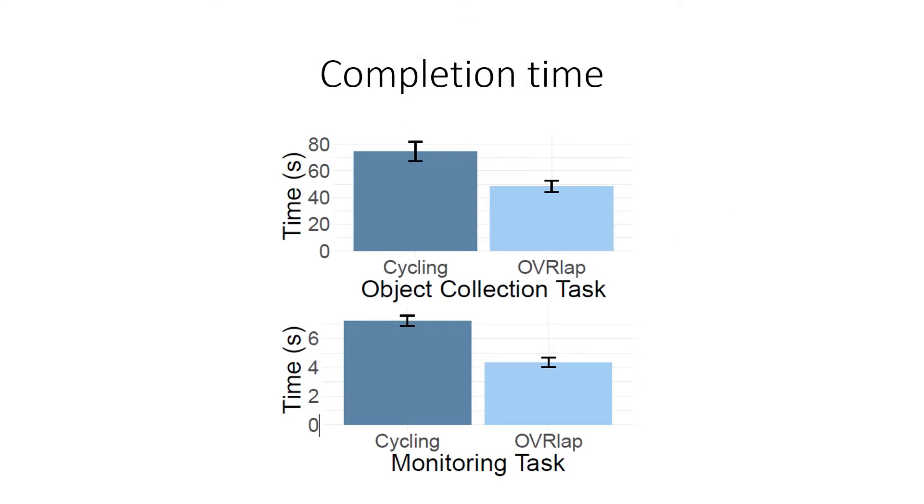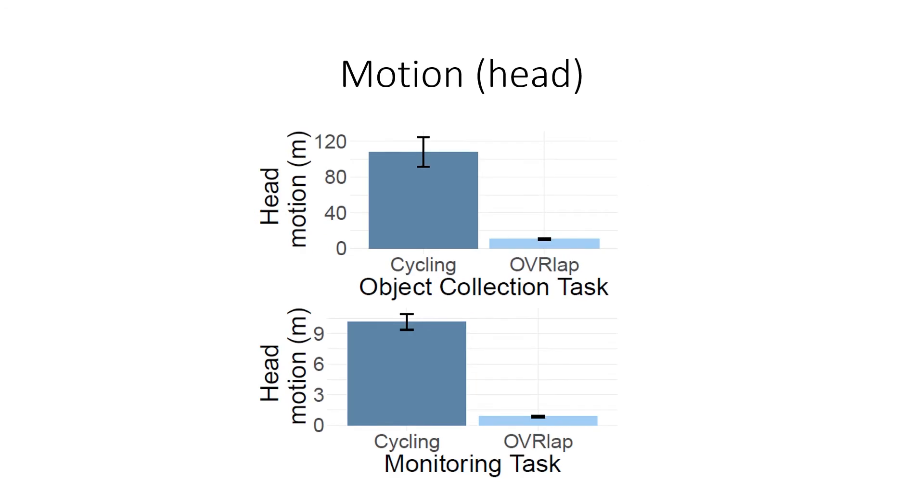As you can see here, participants completed both tasks significantly faster with the OVRlap technique. The motion data are also significant in favor of OVRlap. Of particular note are the motion data for the monitoring task, which for the OVRlap technique correspond roughly to the motion needed to turn around once. This suggests that participants moved no more than they absolutely had to.